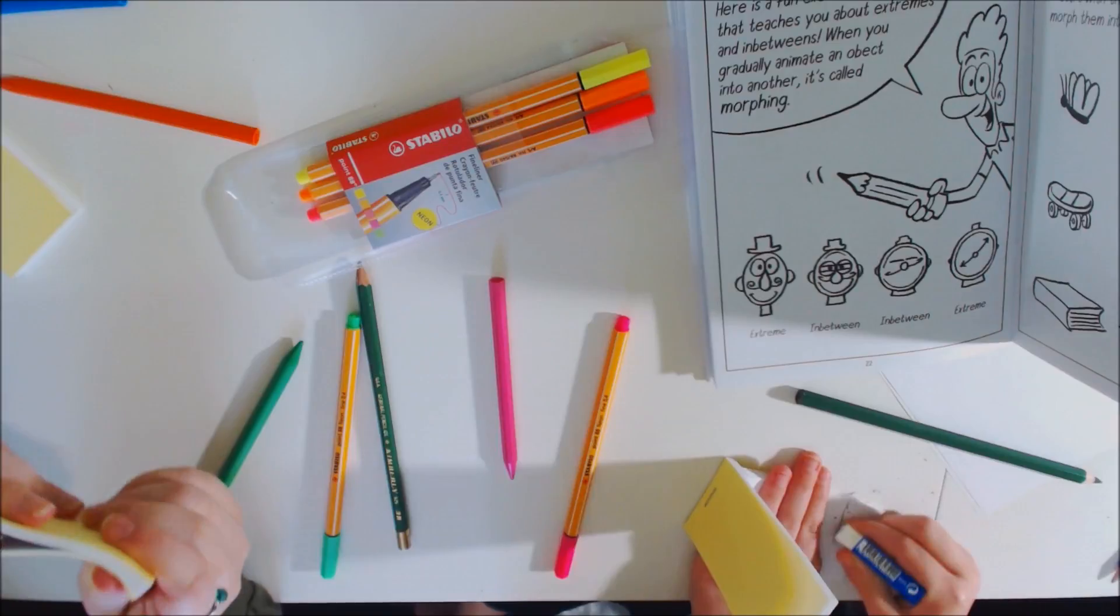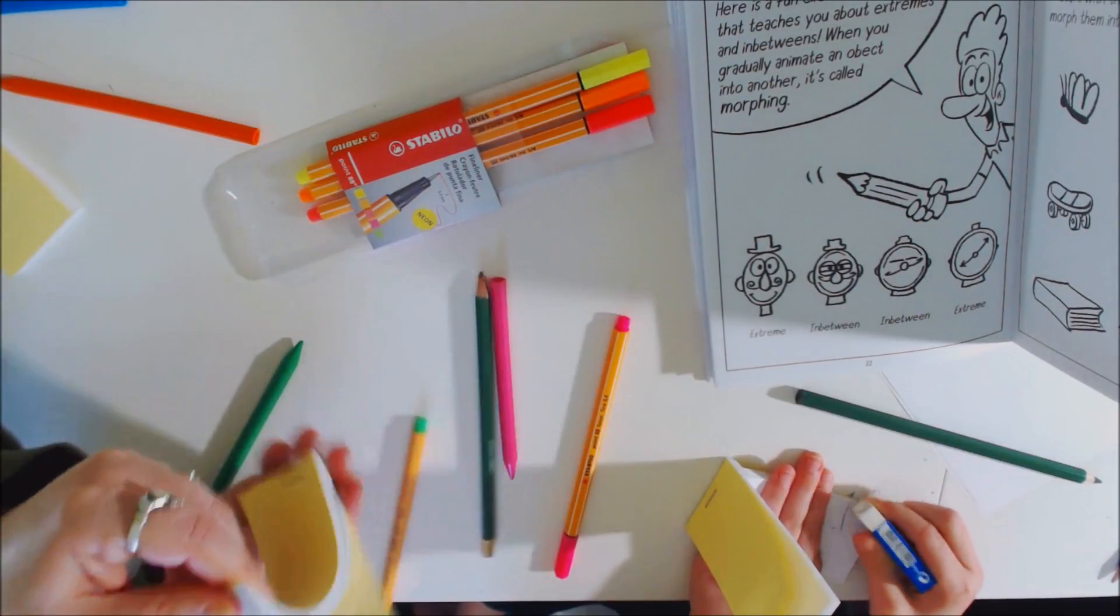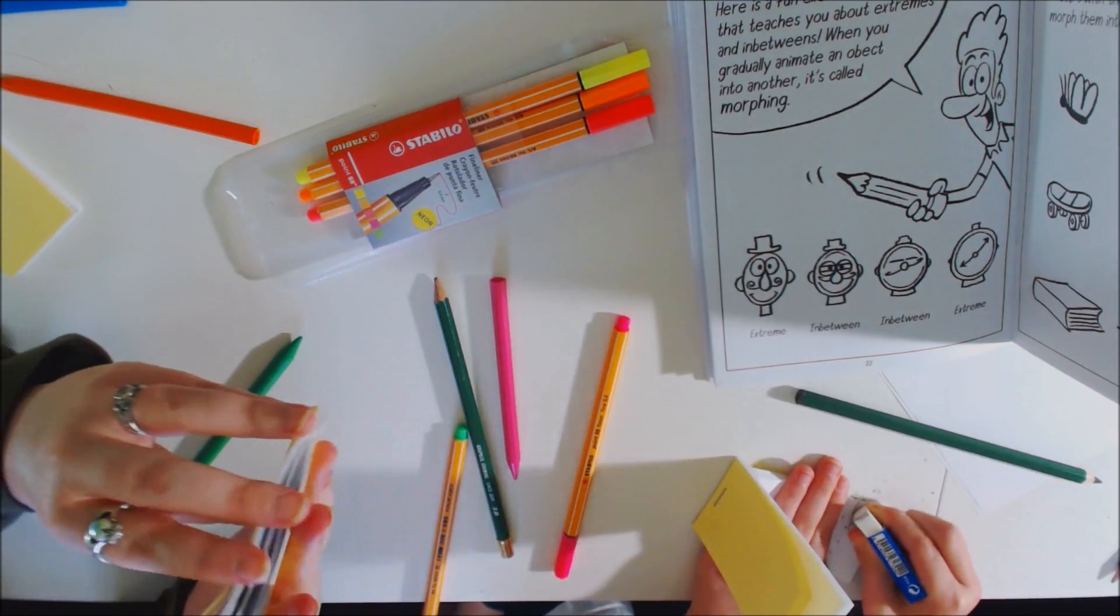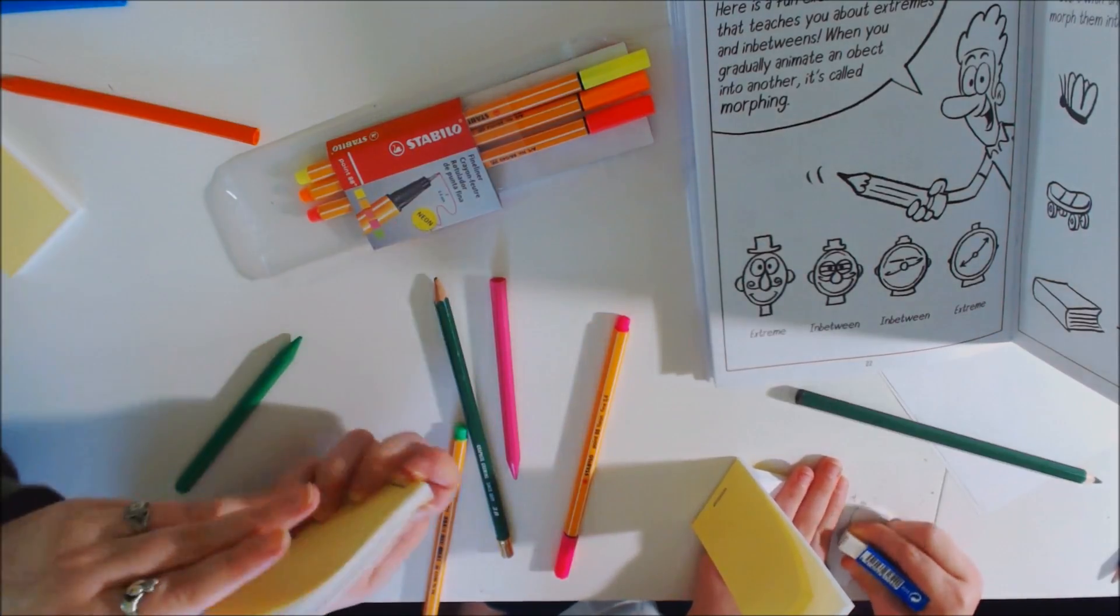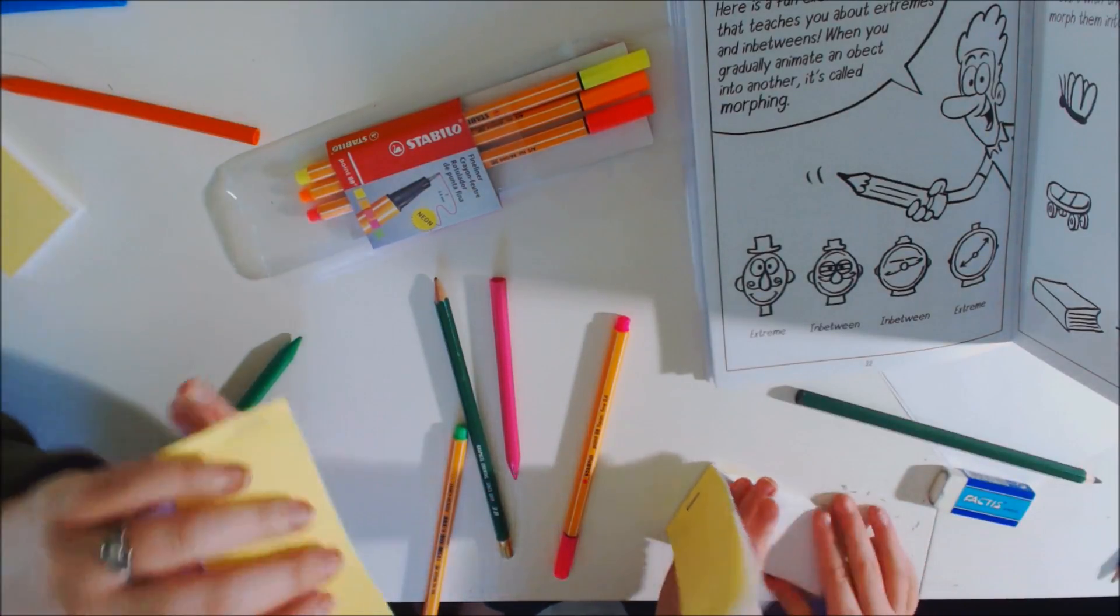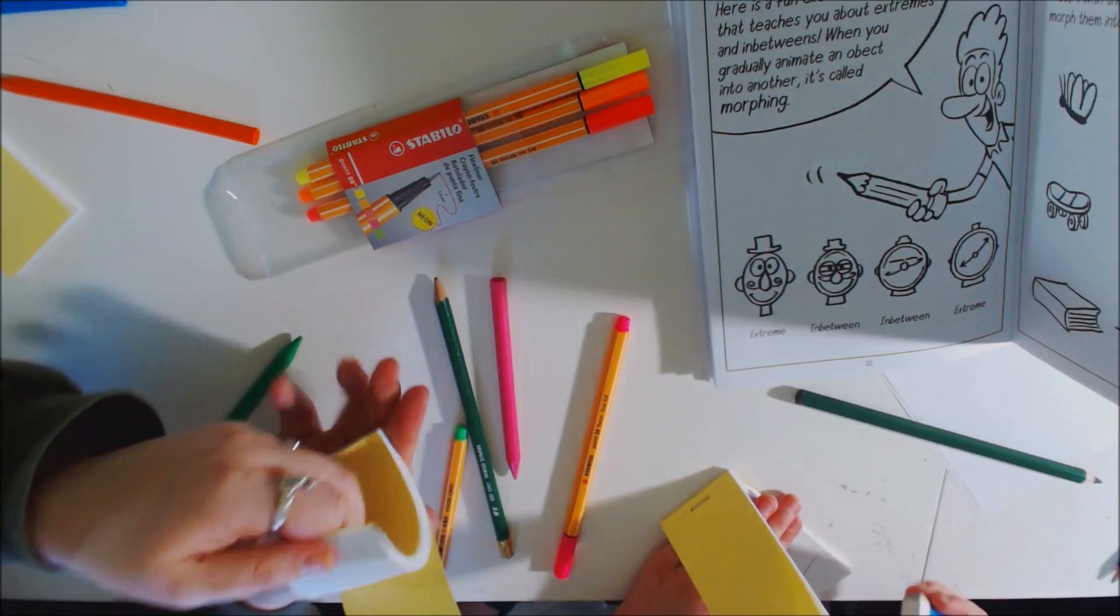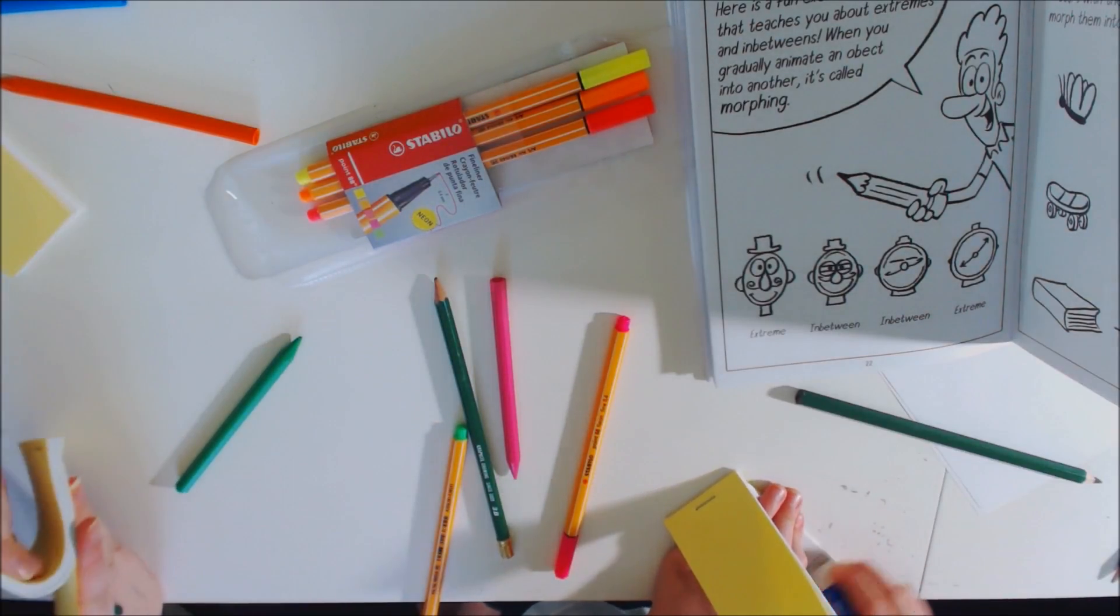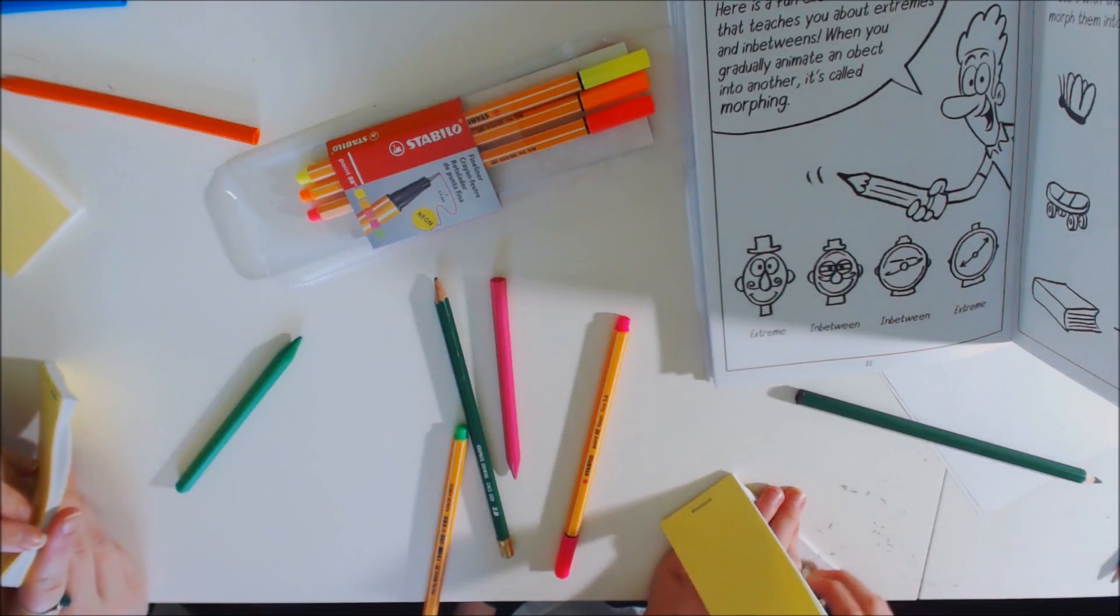One thing you can do is, you know, because we're using it this way like this, you could flip it around. Like Rhianna, see how we're using it this way? You can flip it upside down and go on the other side and use the other side too. So you can use both sides. So it's almost like having four books instead of two.